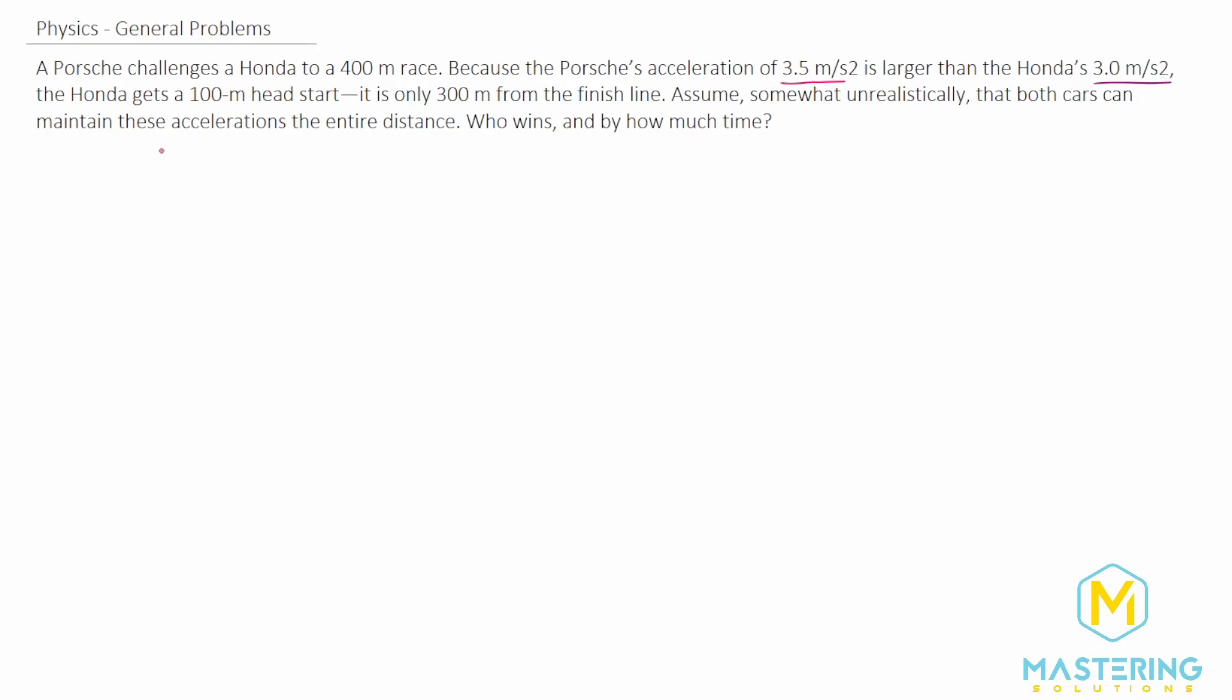Because the Porsche has the faster acceleration, we're going to give it a 100 meter head start, so it's starting from 300 meters instead of 400. They tell us that we're going to somewhat unrealistically assume that both of the cars can maintain that acceleration the whole time, and so we need to figure out who wins and by how much.